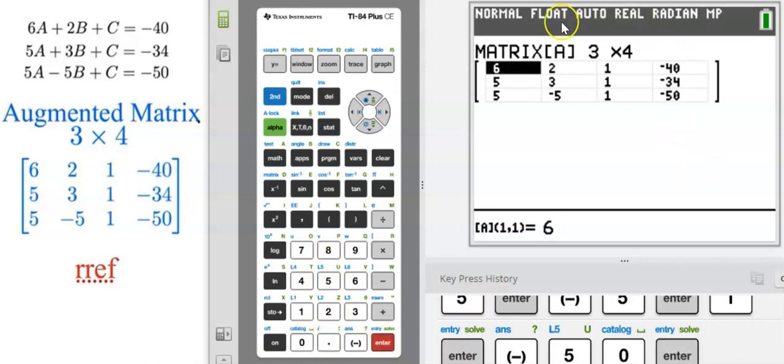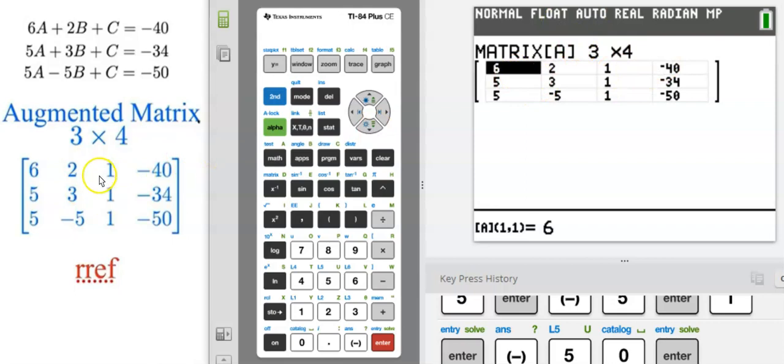Let's double check to make sure that our values in our matrix match what we've entered. Our top row: six, two, one, negative 40. Second row: five, three, one, negative 34. And then five, negative five, one, negative 50. Just take five seconds to double check that, because if you enter one value wrong, your solution is going to be incorrect.